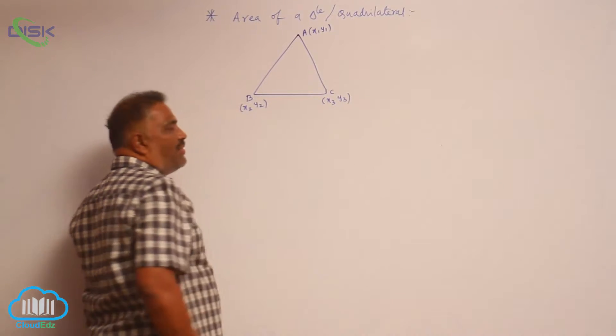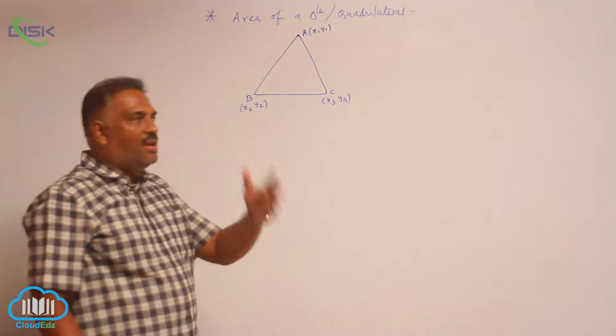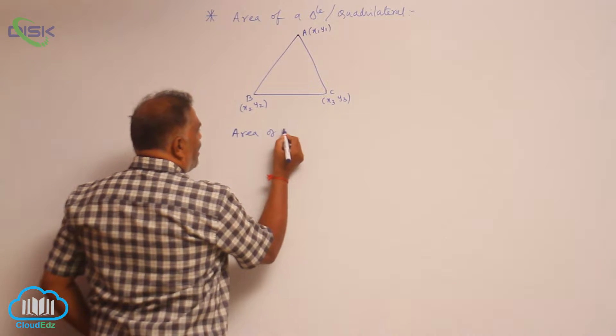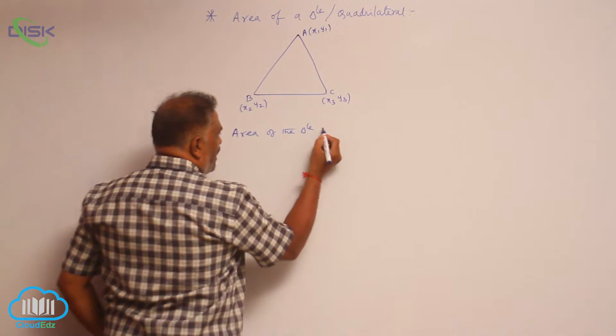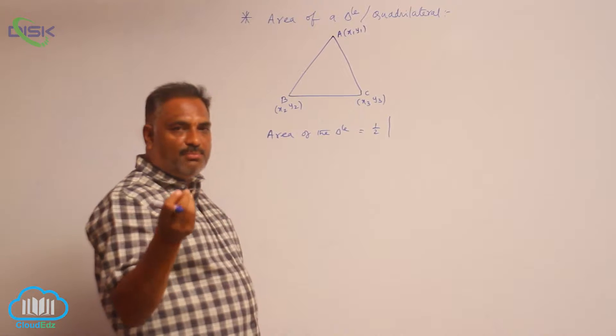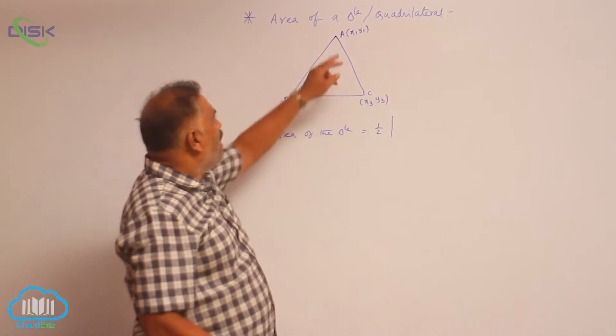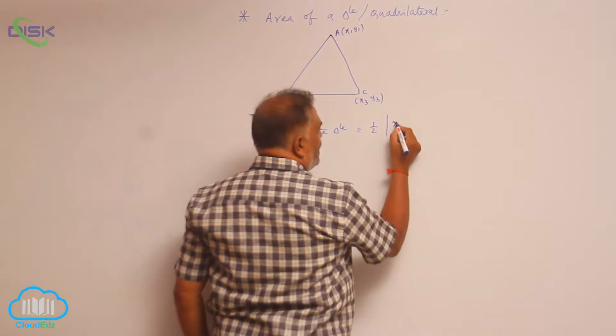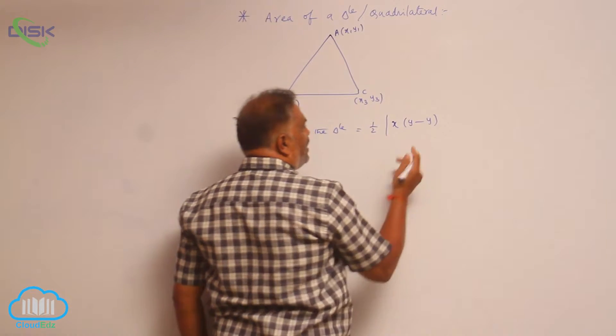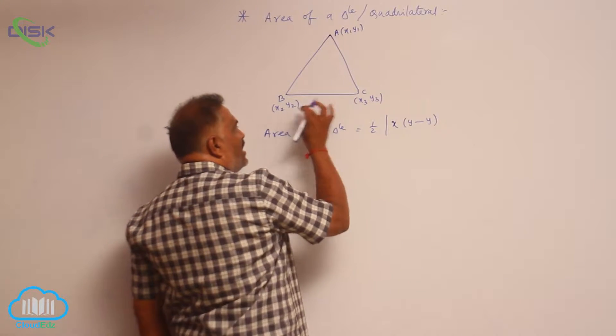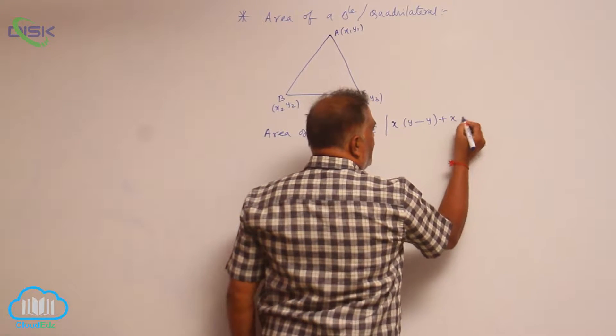When coordinates are given to you, you can find out area of the triangle. The area of the triangle is given by half into... I will tell you a simple technique how to write. How many vertices are there here? For every vertex you write x into y minus y. For one vertex you write one set like this. Since there are three vertices, you write three times like this only.